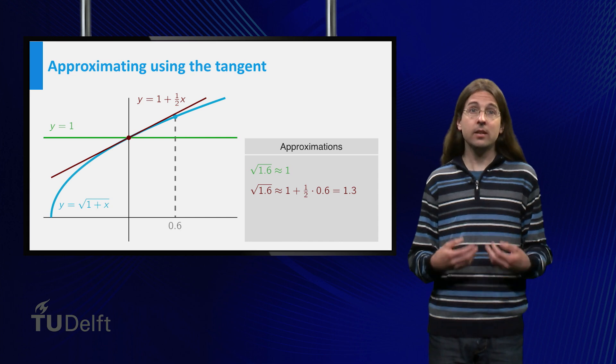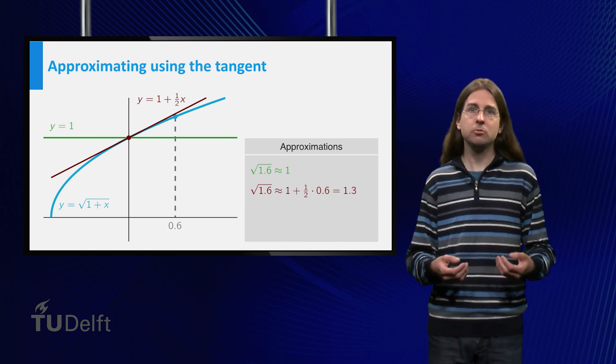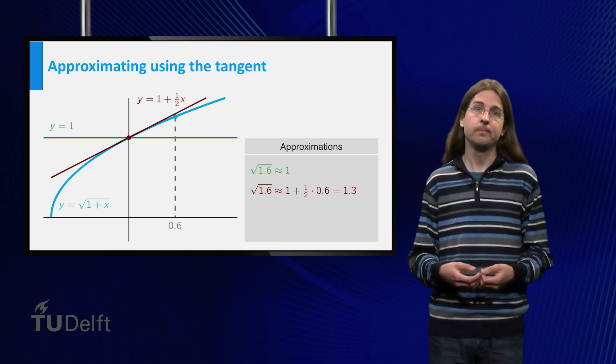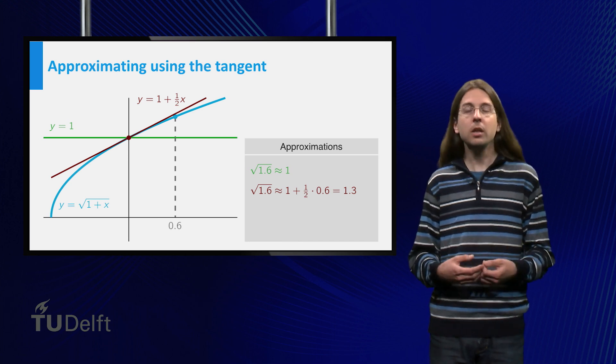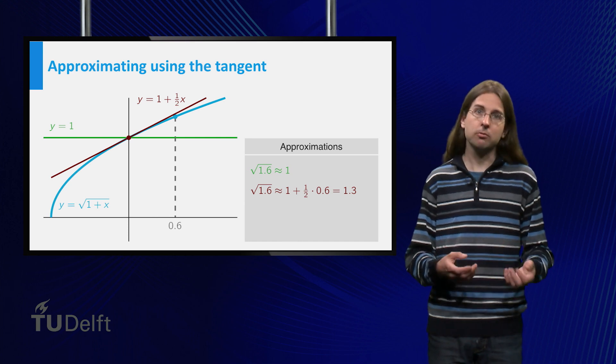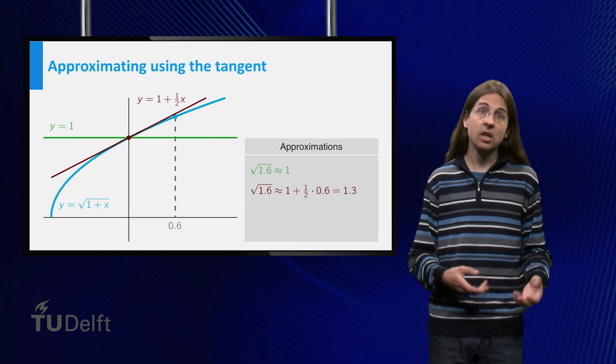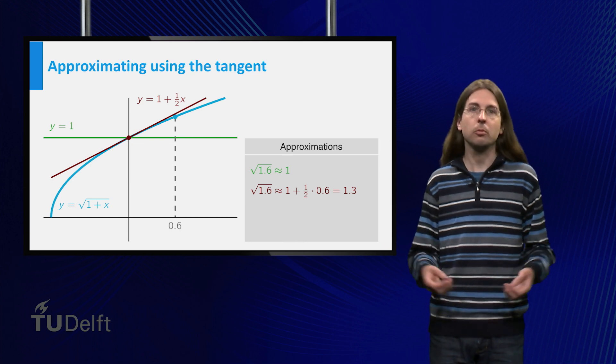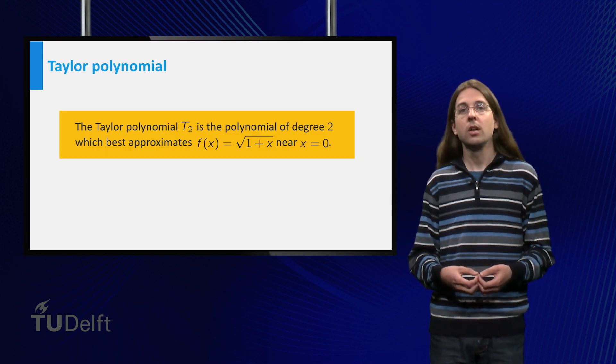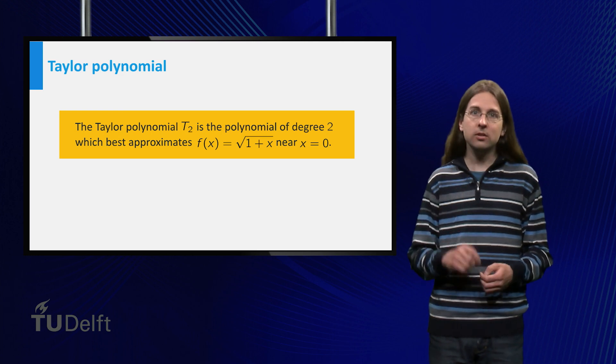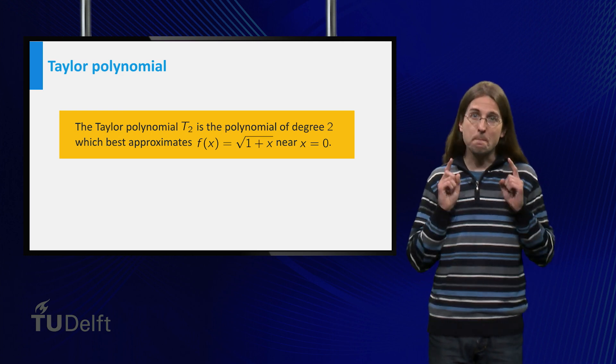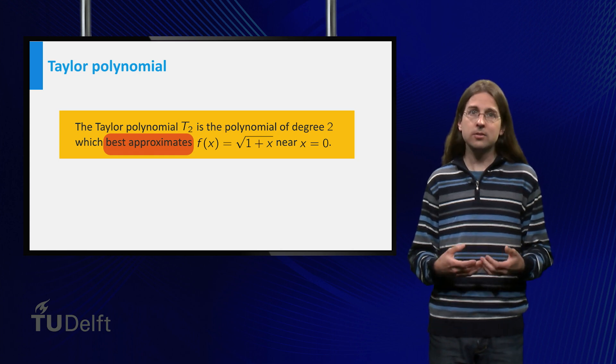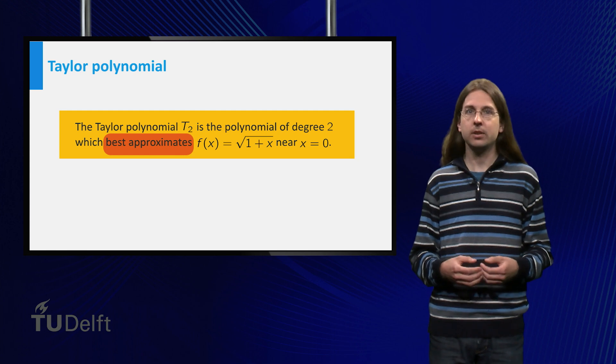To obtain an even better approximation of our square root, we first realize that 1 plus x over 2 is a polynomial of degree 1. Thus, we can try to approximate our function not with a polynomial of degree 1, but with a polynomial of higher degree instead. Let's start with 2. It turns out there is one polynomial of degree 2 which best approximates square root of 1 plus x near 0. This is called the Taylor polynomial of degree 2.